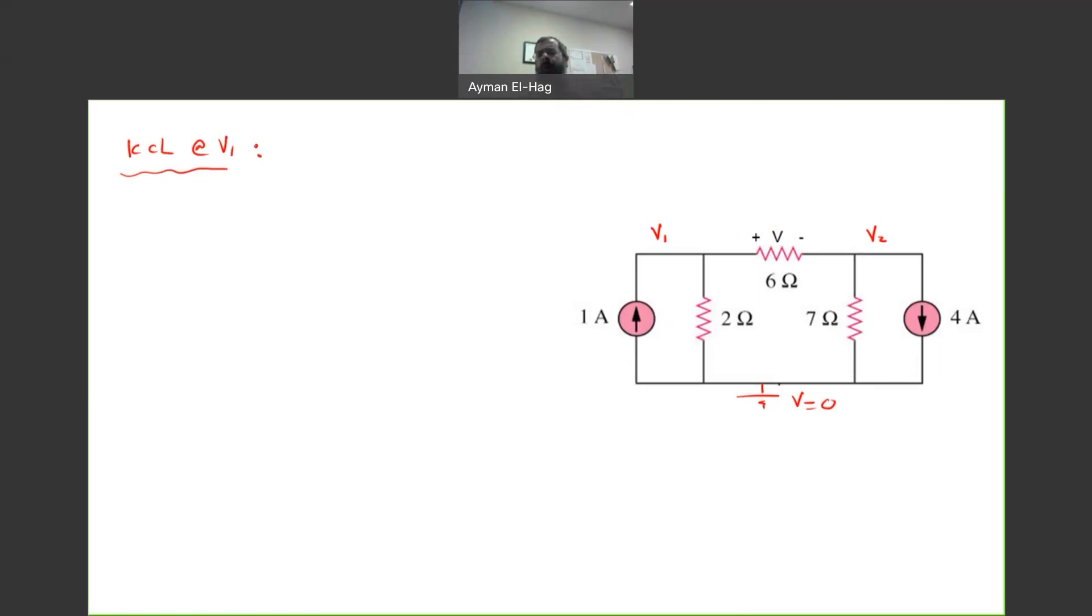Personally, I assume always the current leaves the node. So, this is leaving and this is leaving. Remember, do not assign any current variable. We don't need to do that.